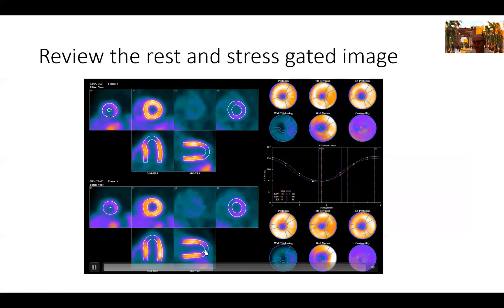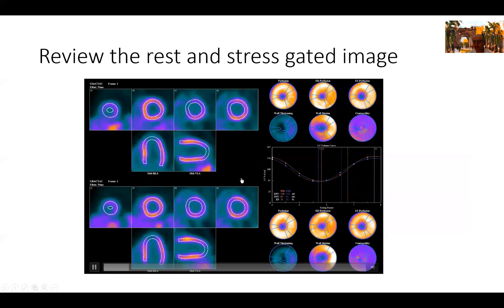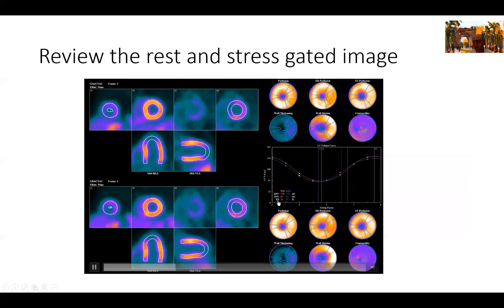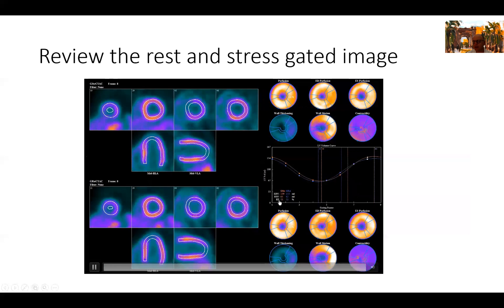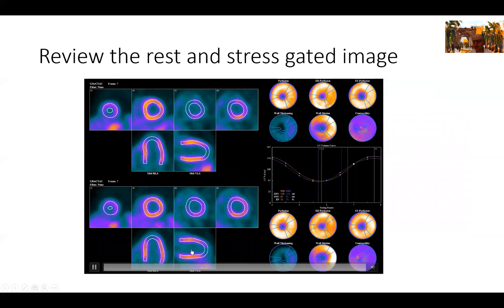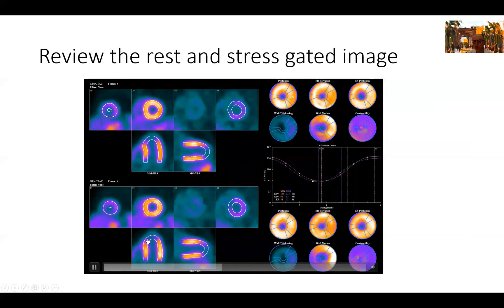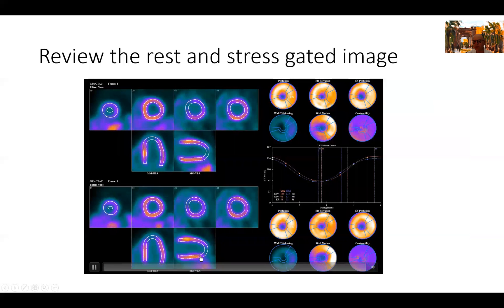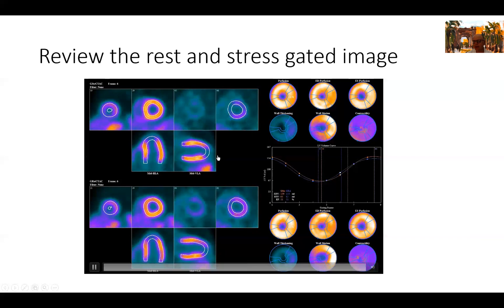Then we go to the gated images. We can see these contours are very nice, tracking the heart nicely in rest and stress images. EF is mildly reduced. It's not normal, but it's not very abnormal. It's around 50 to 53% here. There's akinesia of the apex here. As you can see, there is no brightening of the myocardium in the apex indicating akinesia.